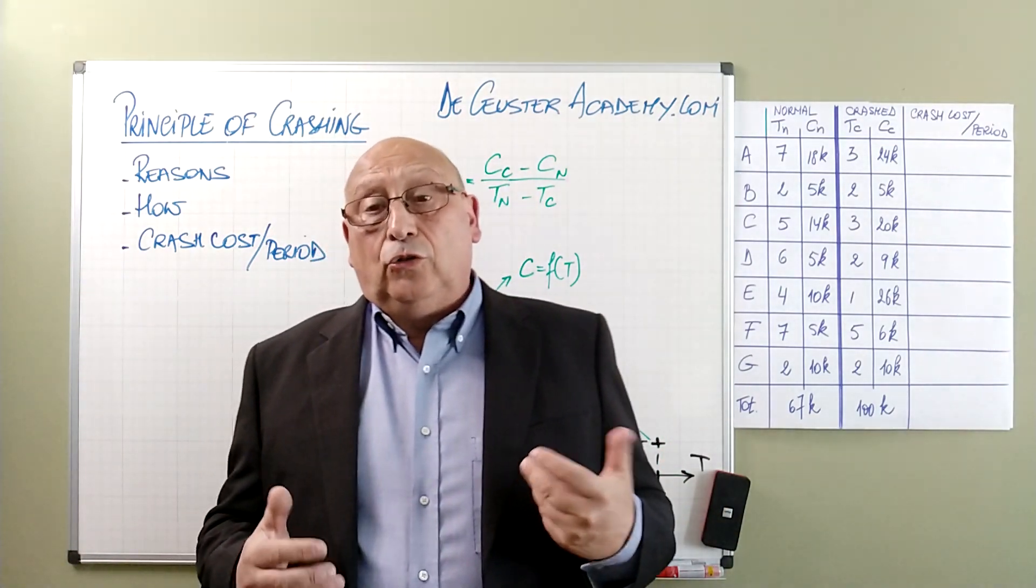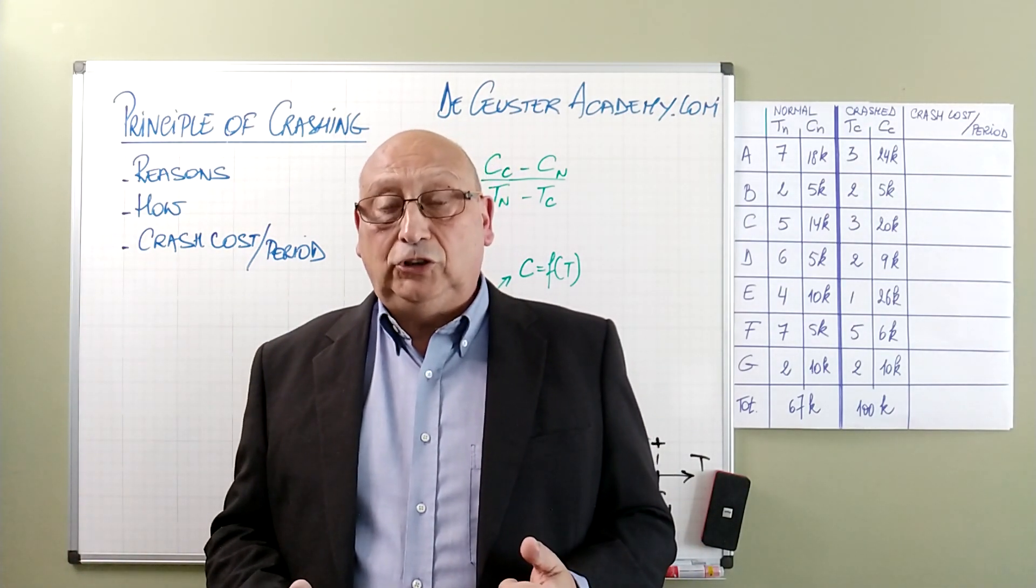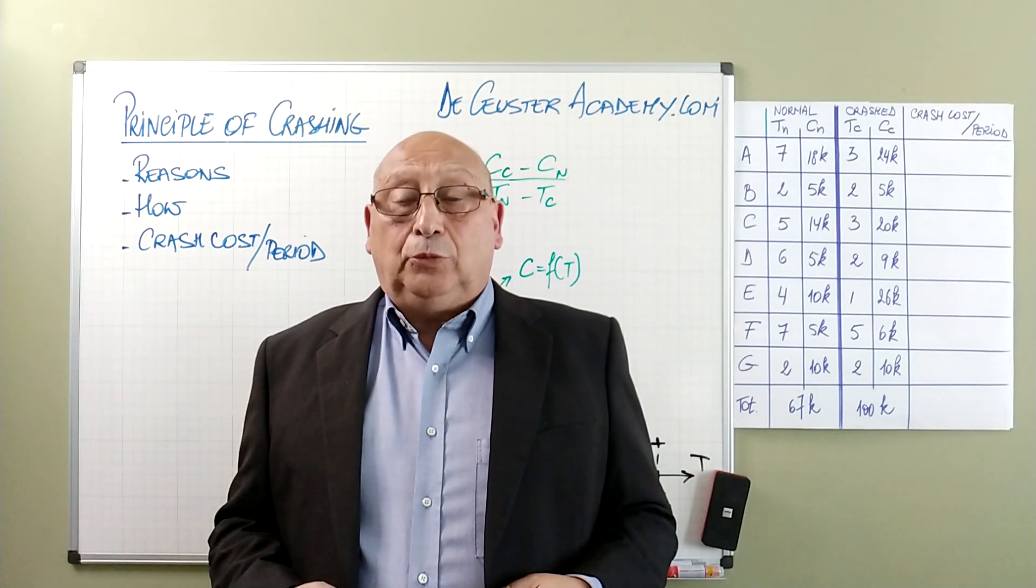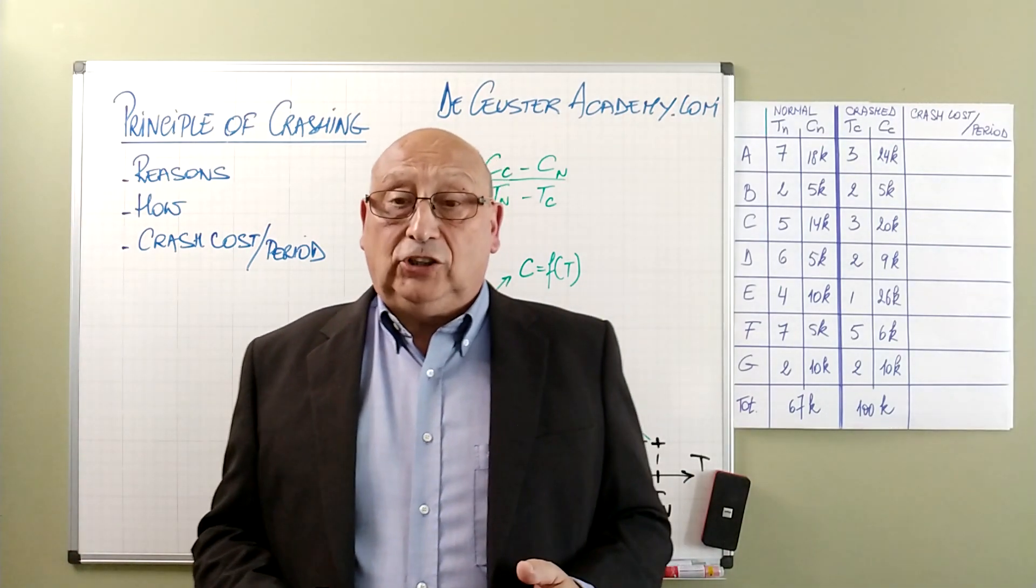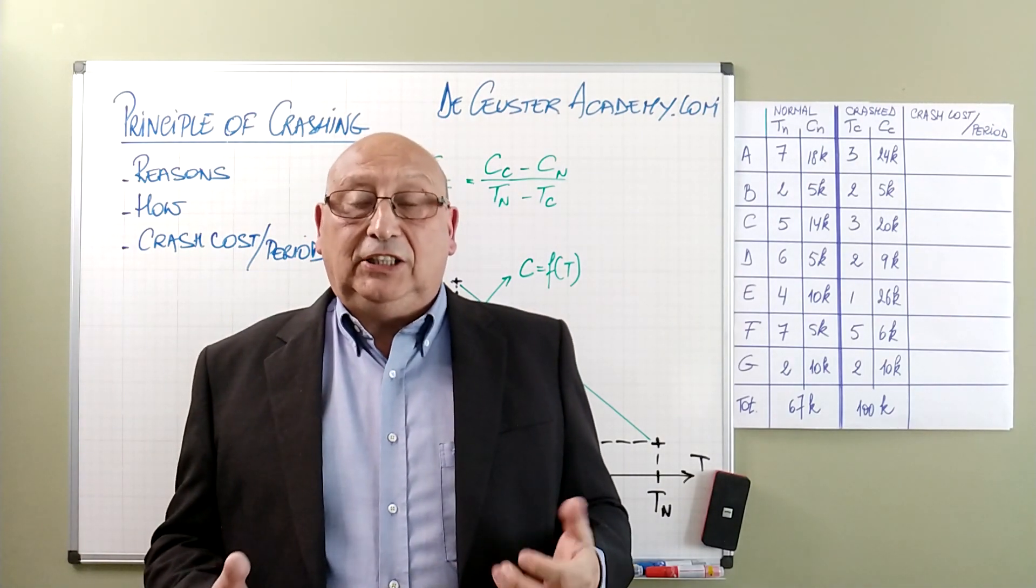In the table here we have an overview of the normal duration and the normal cost of the activities of the project. Next to that we have a table with the crashed duration and the cost when we are going to crash those activities.